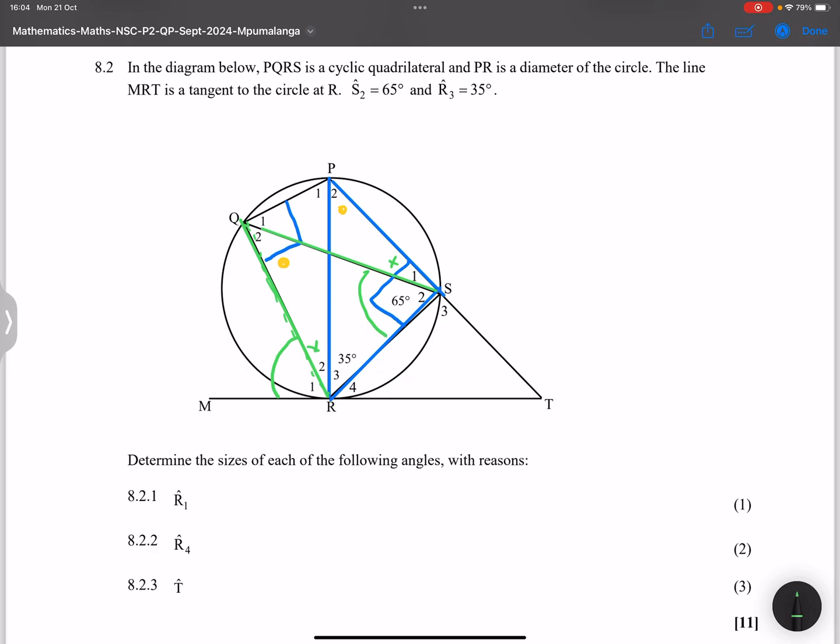So that means that R1 is equal to S2, and this is equal to 65. And we can just simply say that's the tan chord theorem.